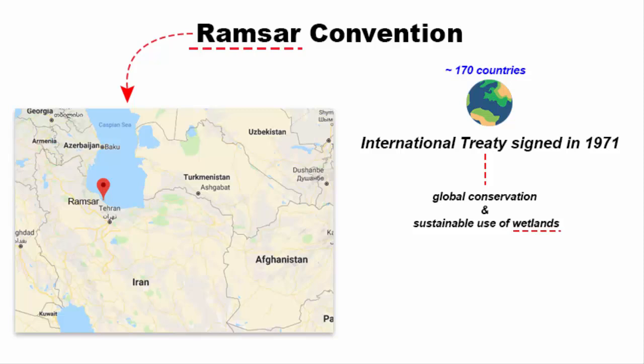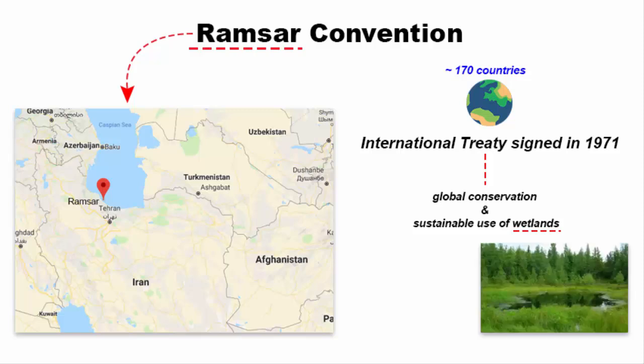Now, what is a wetland? A wetland is a place where the land is covered by water or water is present either at or near the surface of the soil all throughout the year. The moment you see a mixture of land and water, it becomes an intersection point between the terrestrial and aquatic ecosystem.